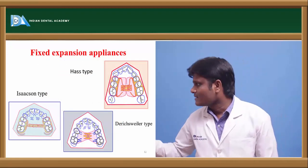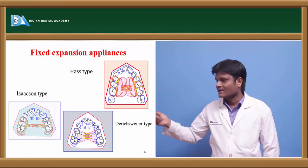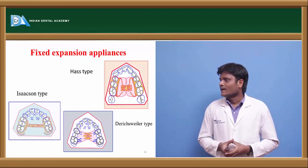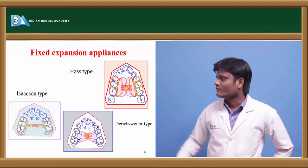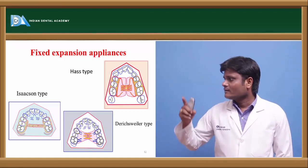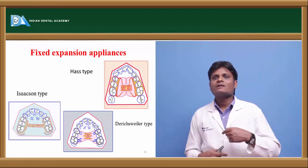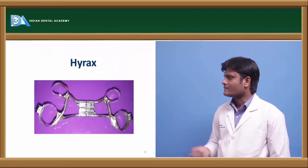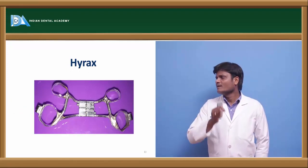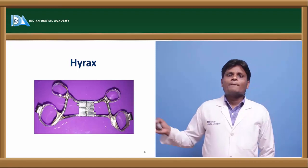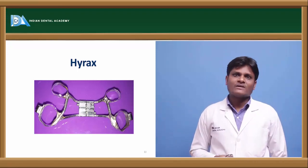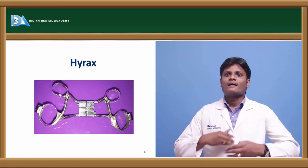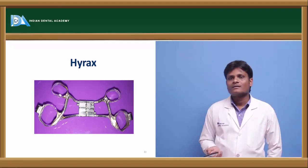These are the fixed expansion appliances: Haas type, Dennis Villa type, and Isaacson (Hyrax) type. They are supported by teeth in the posterior segment and tissues in the posterior segment in the case of the Haas type. These appliances have a screw in the midline — by sequential programmed activation of the screw we can cause expansion of the dental arches. The Hyrax appliance is the most commonly used appliance for expansion, where we band first premolars and first permanent molars, and the Hyrax appliance is soldered to these bands, cemented in the patient's mouth, and activated sequentially to expand the maxilla.